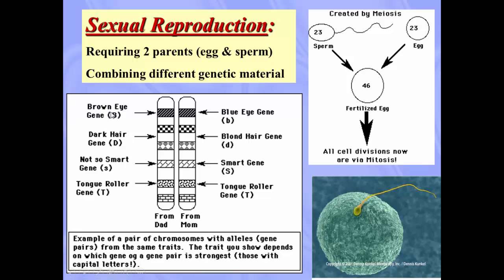This is very introductory, very basic genetics, so don't worry about understanding it too much. We have the capital B and the lowercase b. So we have the brown eye gene, meaning the baby will have brown eyes, and it's going to have dark hair because we have a capital D. We've got the non-sickle-cell and the smart gene — the capital S — so it's going to be smart. They have the big T and big T, so it's going to be a tongue roller. You're going to have a brown-eyed, dark-haired, smart, tongue-rolling baby.